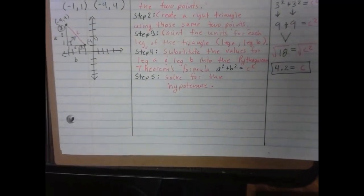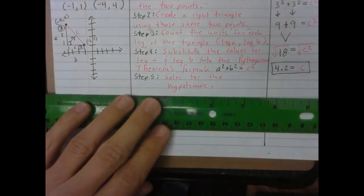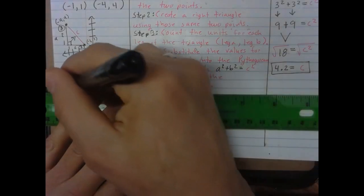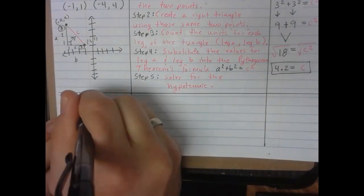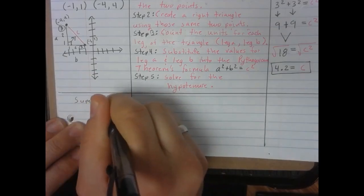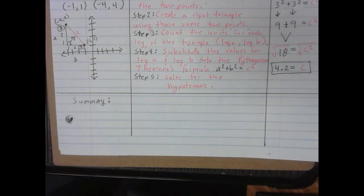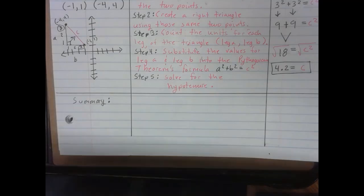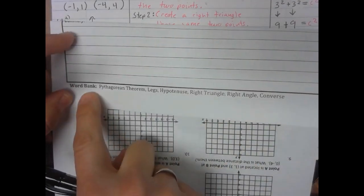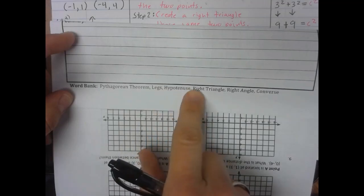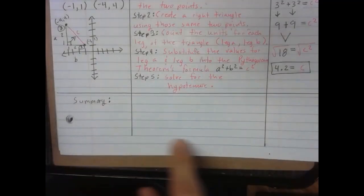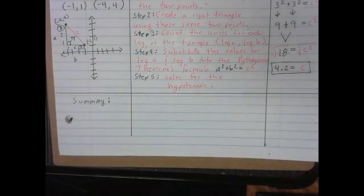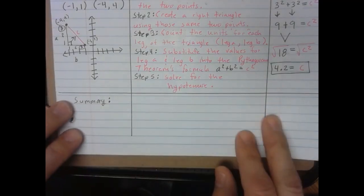Now I want to go ahead and write the summary at the bottom. I'll use my ruler to section it off, and write 'summary' beside it. I'm going to write a summary using the words from the word bank in the notes. Looking at the bottom of the word bank, it had several words: Pythagorean theorem, legs, hypotenuse, right triangle, right angle, and converse. I want to use as many of those as I can in my summary, always describing the process I used to solve the problem.